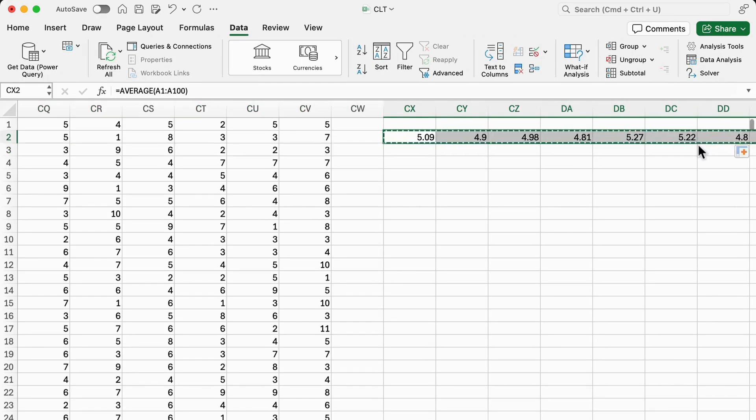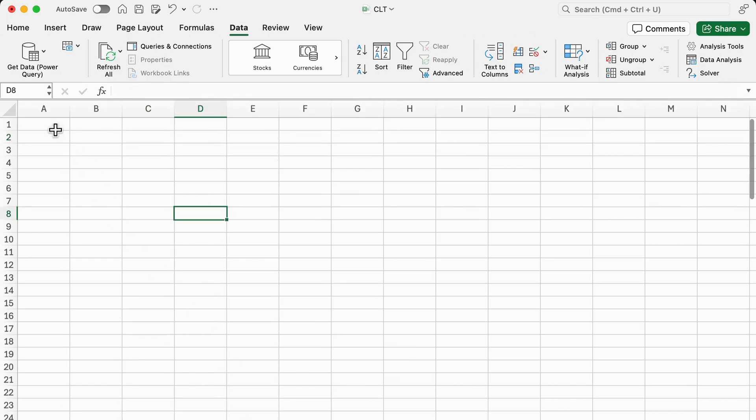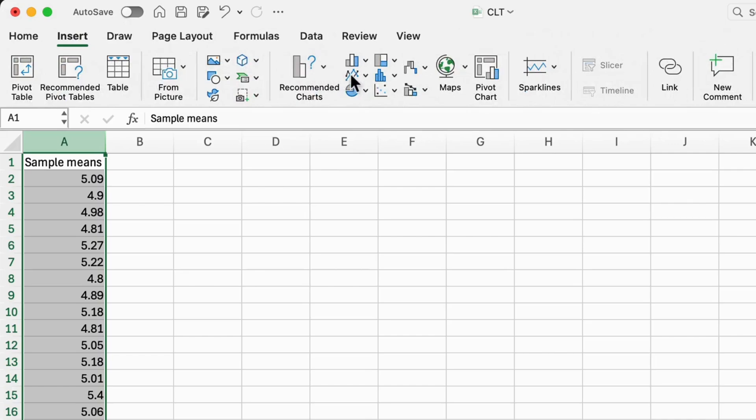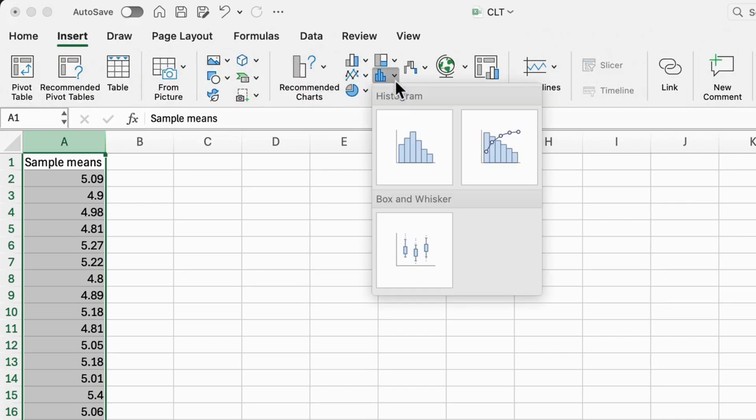Copy these values and paste into a new worksheet. Transpose the mean values into a column. Then, create a histogram of these 100 sample means.